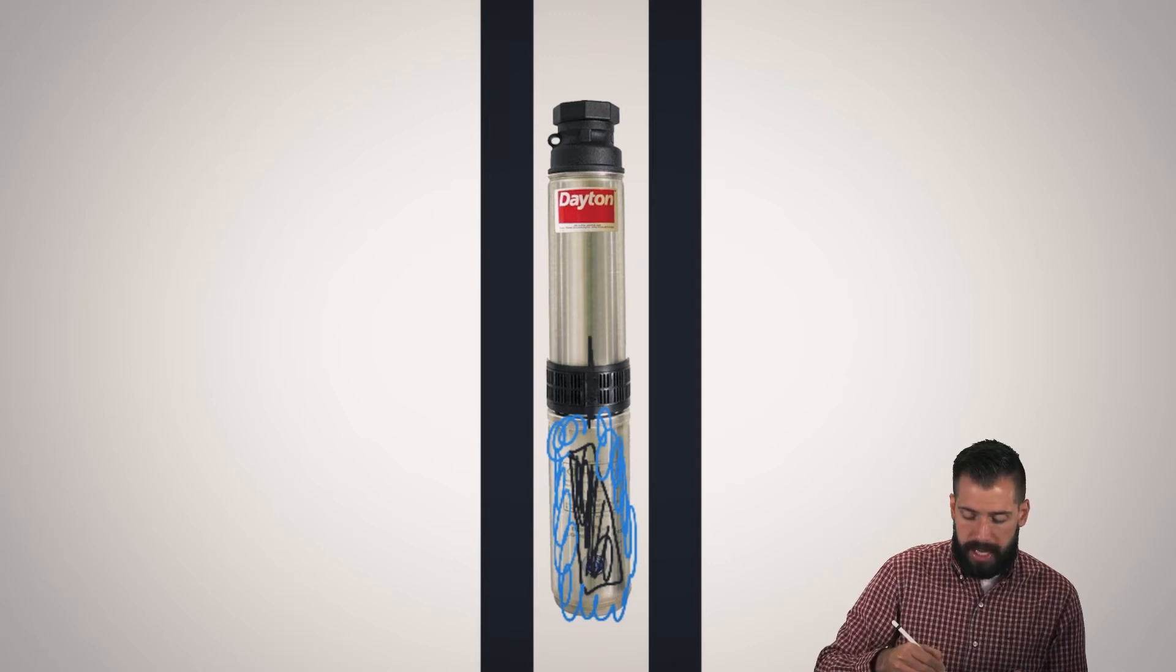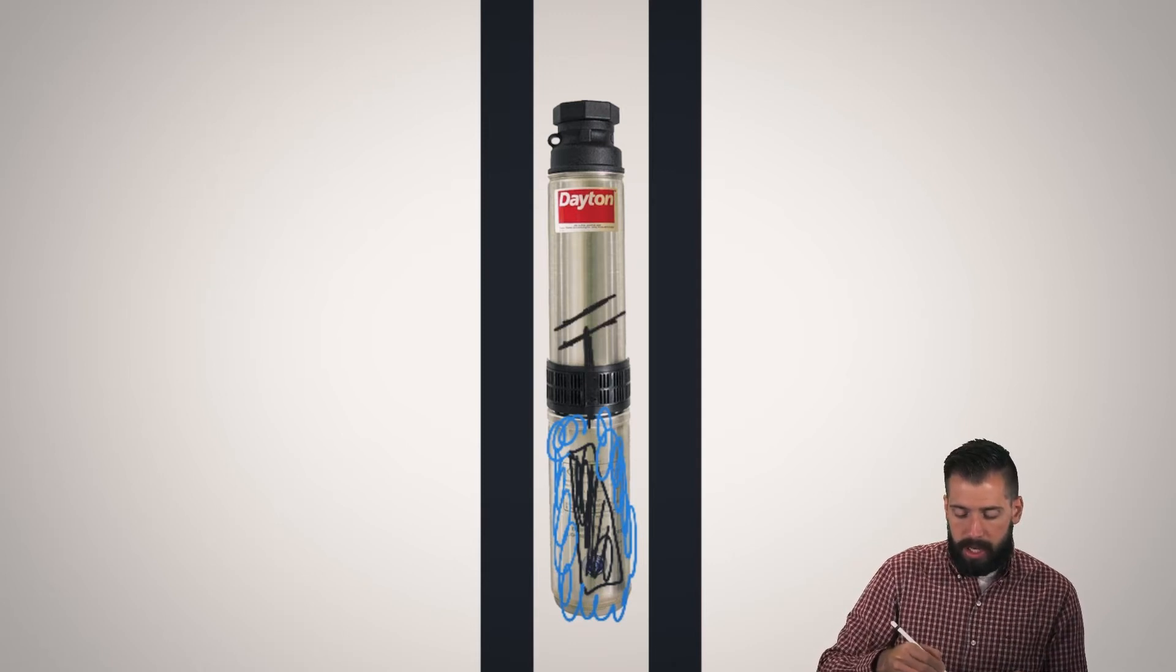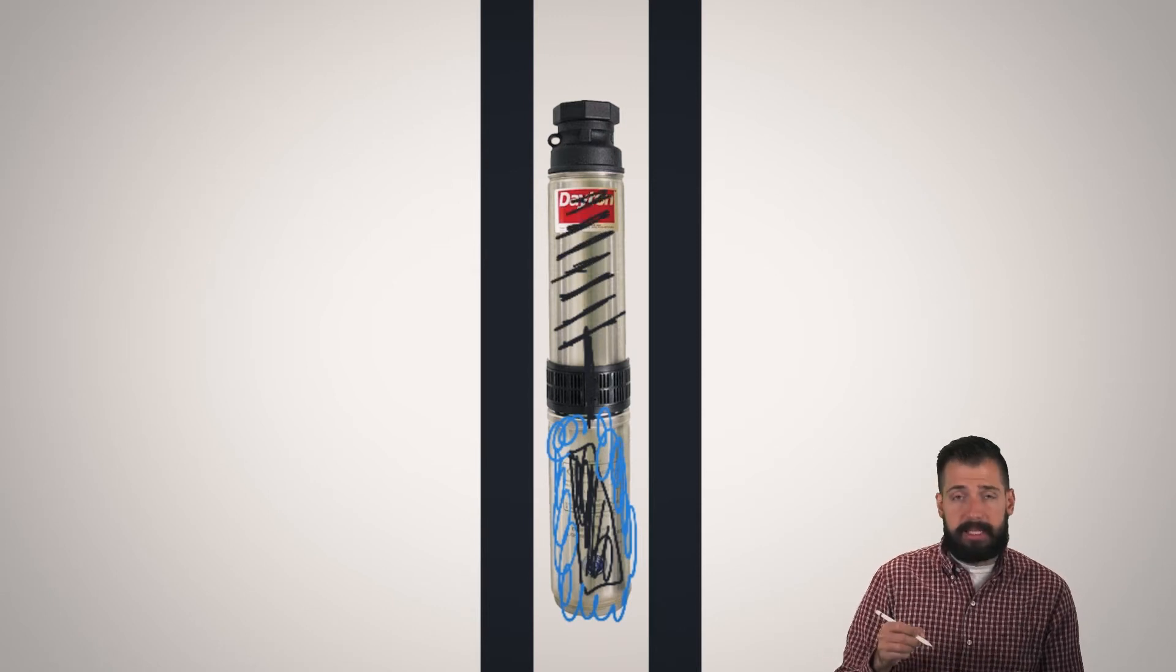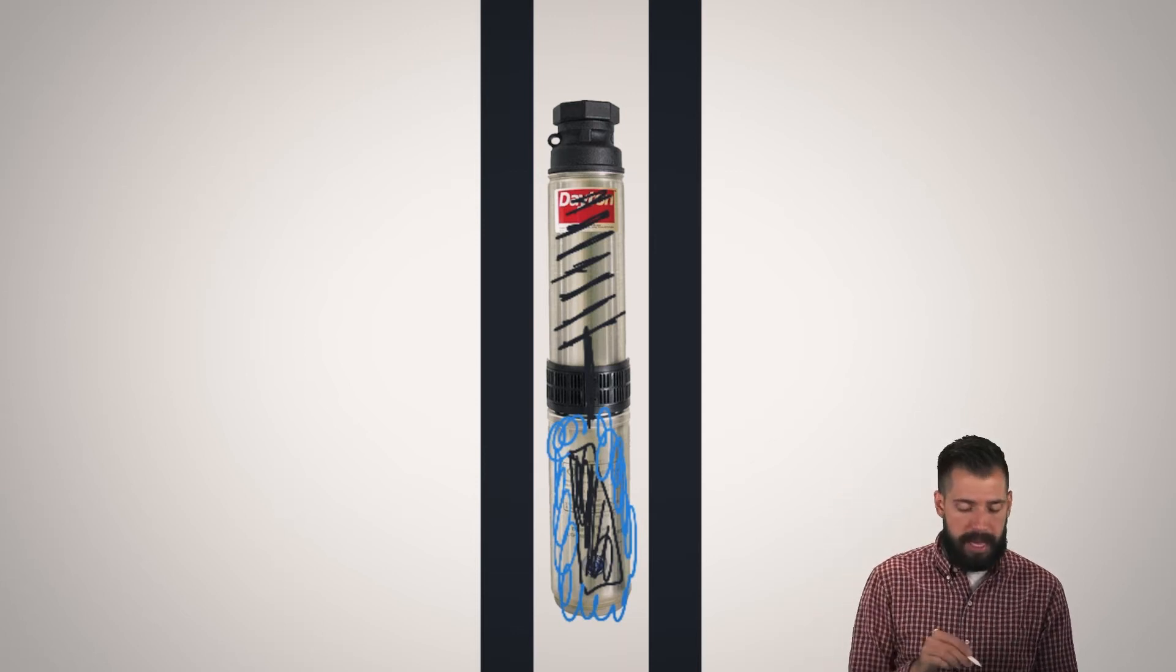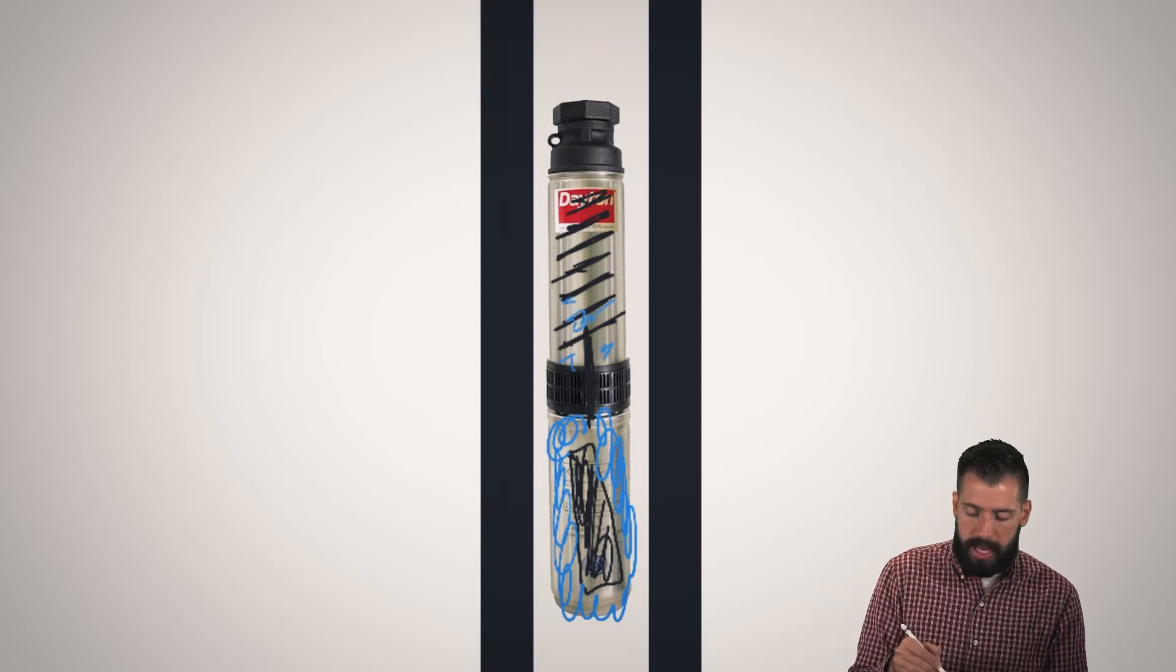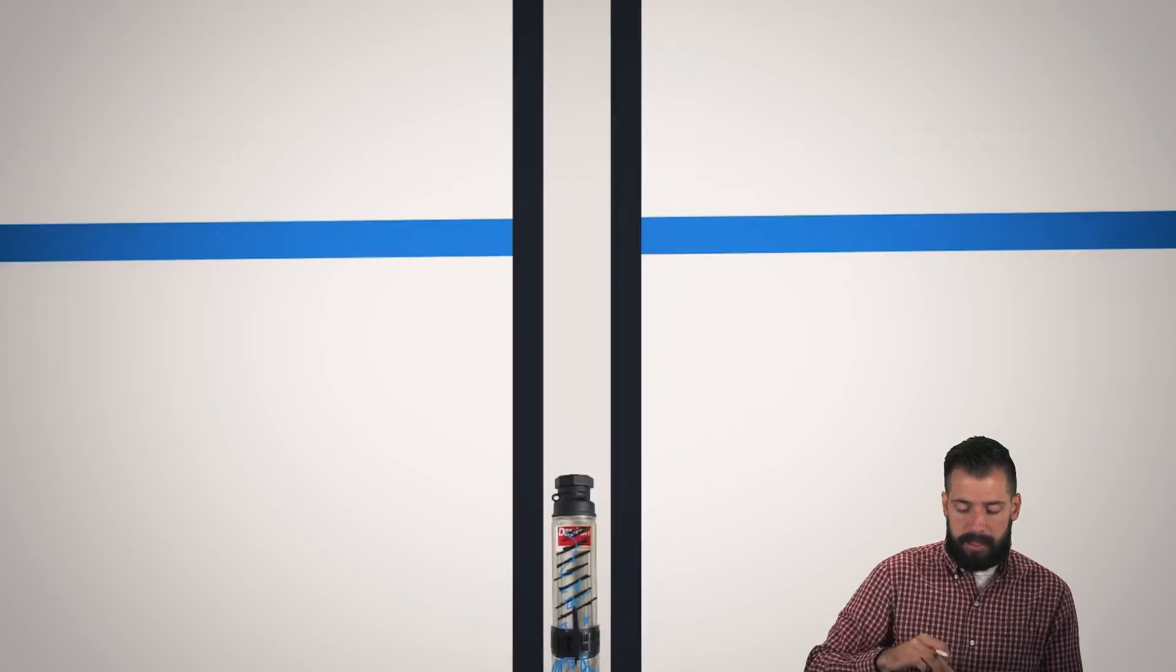So whenever that motor is spinning, it is spinning a bunch of little impellers. And basically, think of those as little fan blades. And those fan blades are spinning and pushing the water up the pipe. And so now we have our water coming into this area, and our water is being pushed up into the pipe.